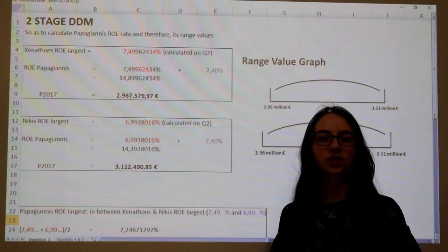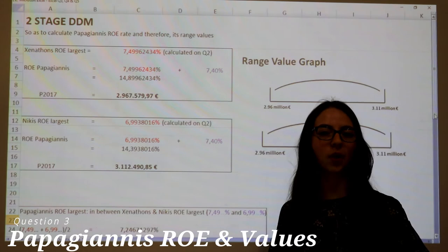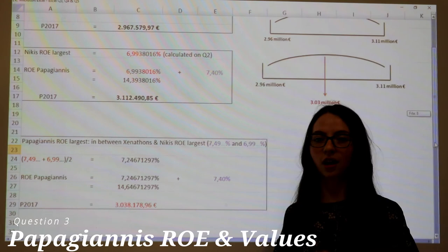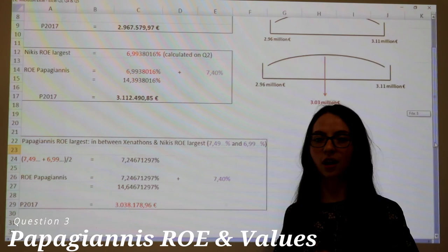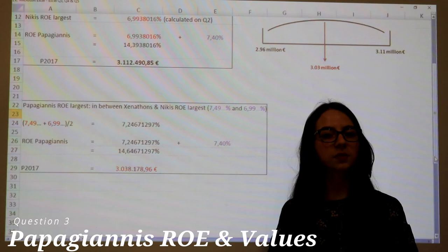This gave us their range. To calculate Papayanis' return on equity and its range values, we used the return on equity of Senator and Niki, plus a small equity risk premium on both, since Papayanis is a small company. These sums gave us two different rates that we used on the constant perpetual DDM for Senator's price and on the growing perpetual DDM for Niki's price. For Papayanis' return on equity, we used the average return on equity of the comparable companies plus the small equity risk premium. The resulting rate was substituted into the two-stage DDM, giving us Papayanis' price.